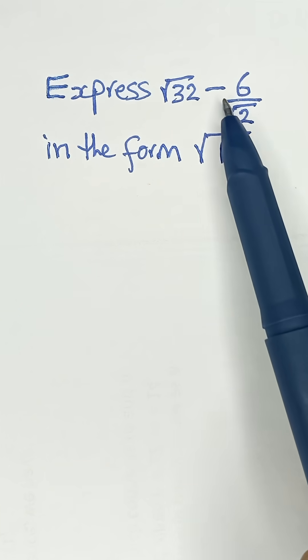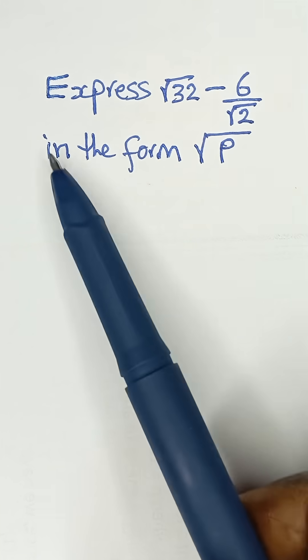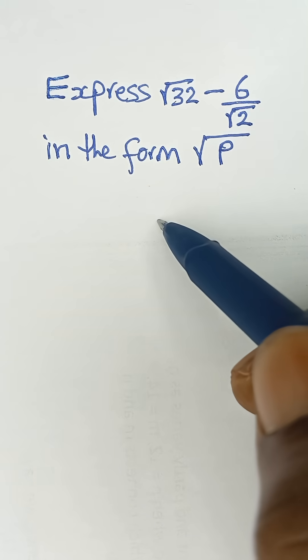Express √32 - 6/√2 in the form √p. So for us to simplify this, let's simply take the LCM.